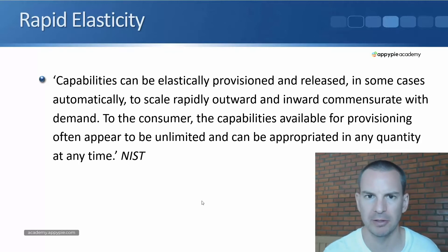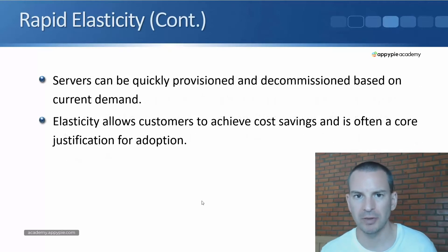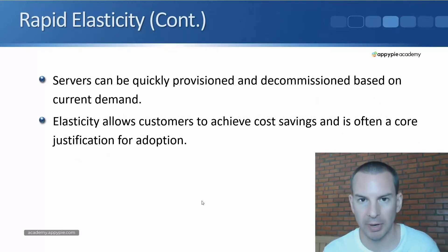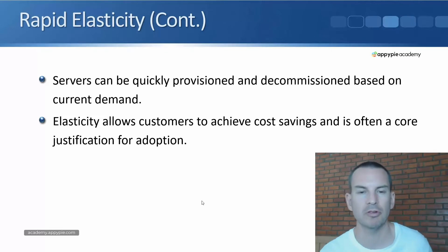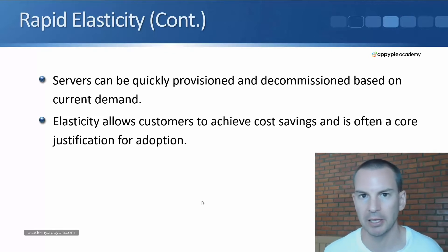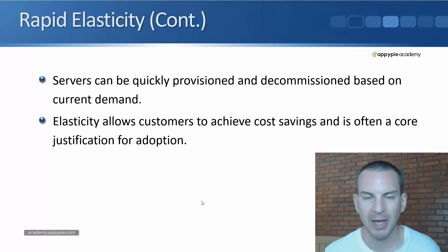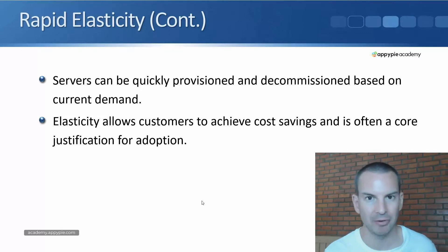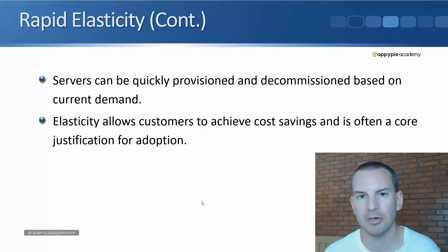So let's have a look at what this actually means. In the last lesson on on-demand self-service, we saw that servers can be very quickly provisioned and up and running in around 15 minutes. That was for virtual machines. If we're provisioning any other kind of cloud software, that can almost always be provisioned very quickly as well. And just as it can be provisioned quickly, it can be decommissioned just as quickly. So we can very quickly spin up or decommission our services as and when they are required. This is what's referred to as elasticity.